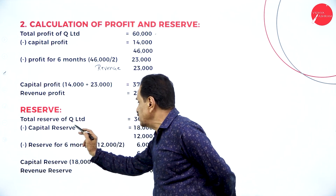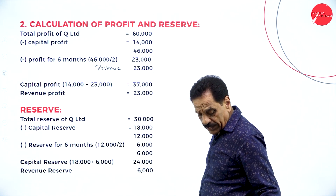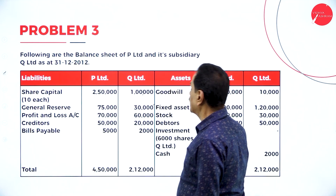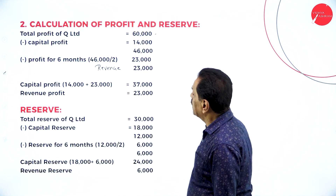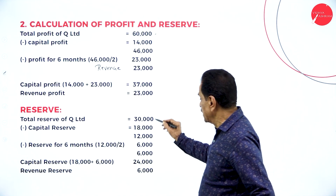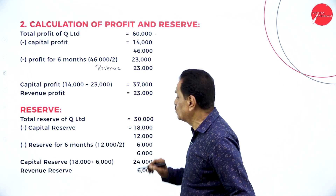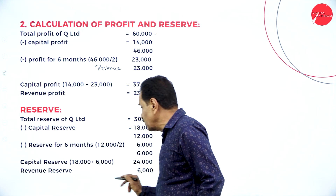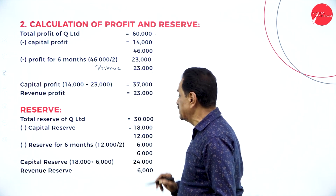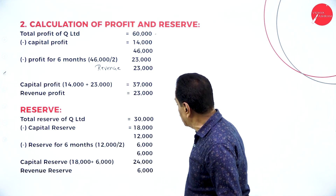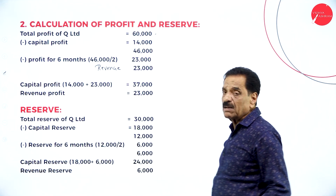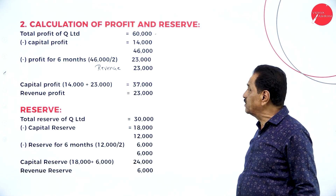Total reserve of Q-Limited is 30,000. Capital reserve at the time of acquisition is 18,000. The balance is 12,000. Acquired after 6 months, so half is 6,000 capital reserve and 6,000 revenue reserve. Total capital reserve: 18,000 plus 6,000 equals 24,000. The balance 6,000 goes as revenue reserve.